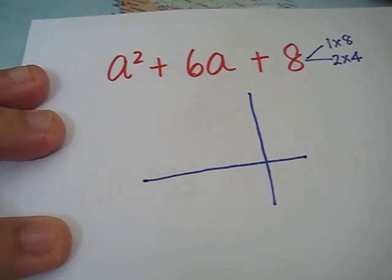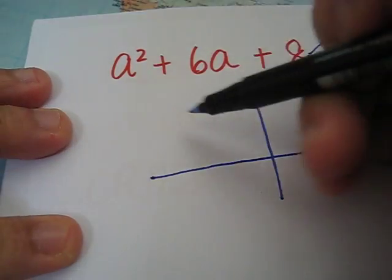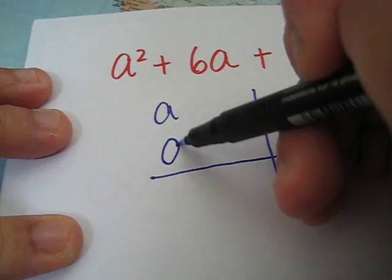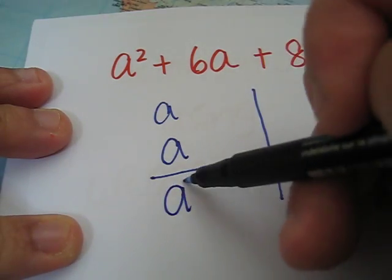First of all, we draw this. a squared is same as a times a. a times a will give us a squared.